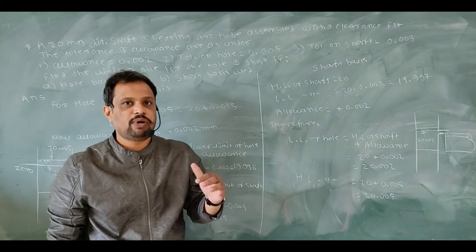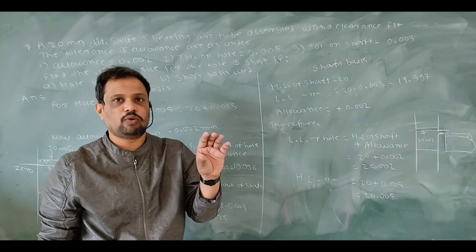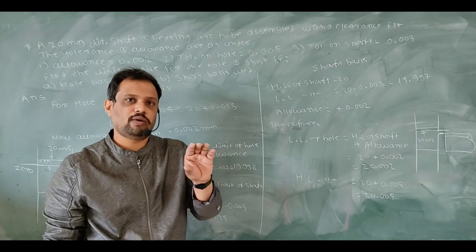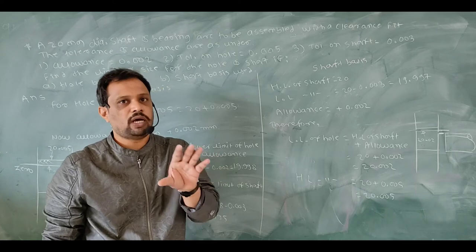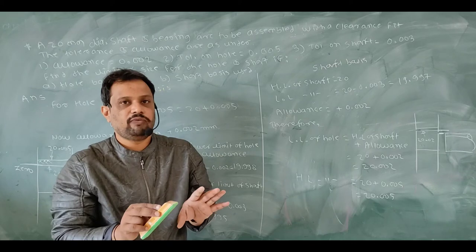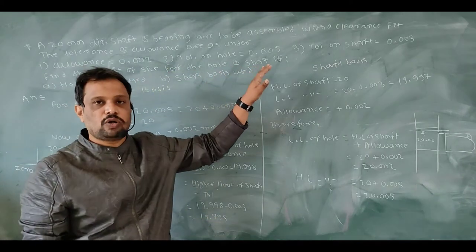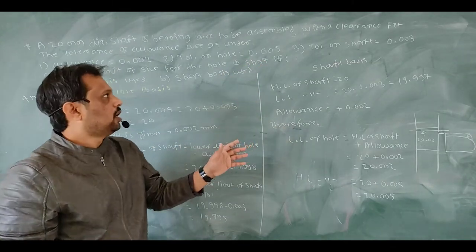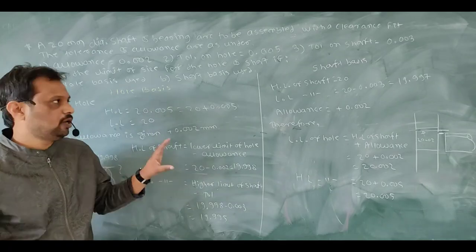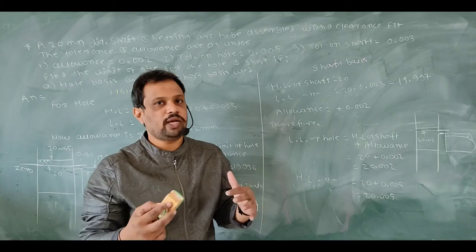From the statement, you have to know that there is a 20mm nominal diameter bearing assembly in which the nominal size of the hole is 20mm and the shaft is also 20mm. But in this assembly, we get a clearance fit. They have given tolerances on the shaft and hole, and from that we have to calculate, in both cases — hole basis system and shaft basis system — their limit sizes for hole and shaft.